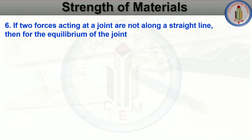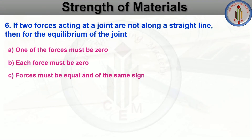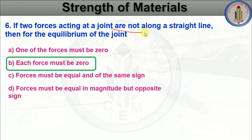If two forces acting at a joint are not along a straight line, then for the equilibrium of the joint — one of the forces must be zero, each force must be zero, forces must be equal and of the same sign, or forces must be equal in magnitude but opposite sign. The answer is: each force must be zero. Since the forces are not along a straight line and equilibrium must be satisfied, there will not be any magnitude of force at the joint — each force must be zero.